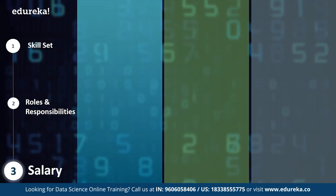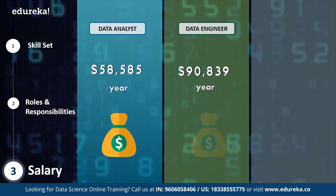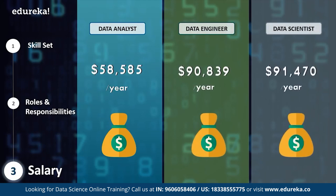Let's look at how much you can earn in these careers. The typical salary of a data analyst is just under $59,000 per year, whereas a data engineer can earn up to $90,839 per year, and a data scientist can earn up to $91,470 per year. While a data engineer and data scientist salaries may look similar at first, a data scientist can earn 20 to 30% more than an average data engineer. Companies like Facebook and IBM have posted salaries up to $136,000 per year for data scientists.